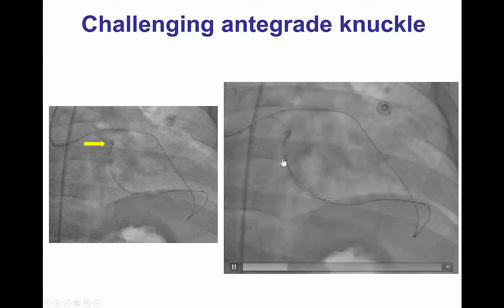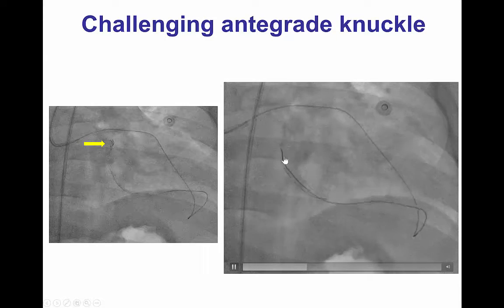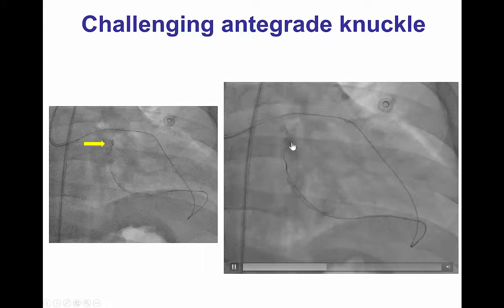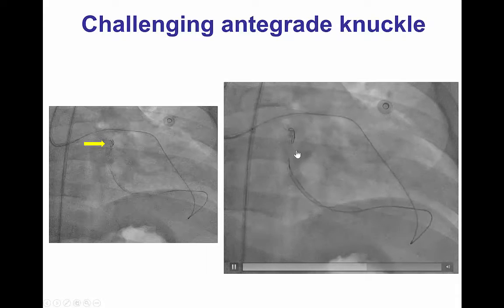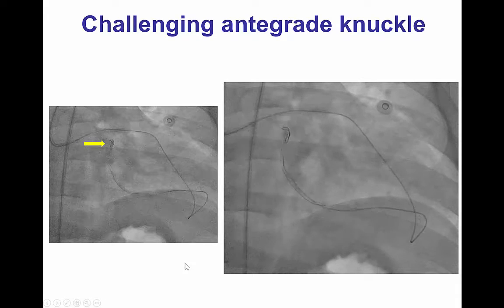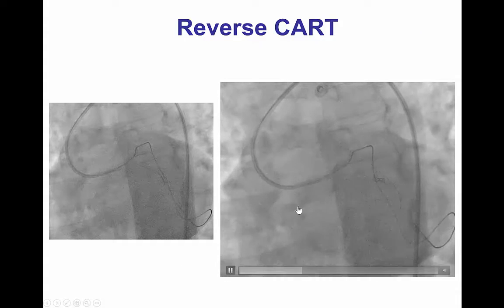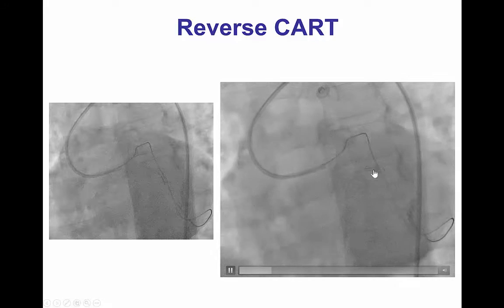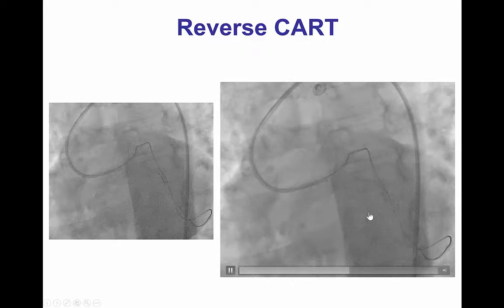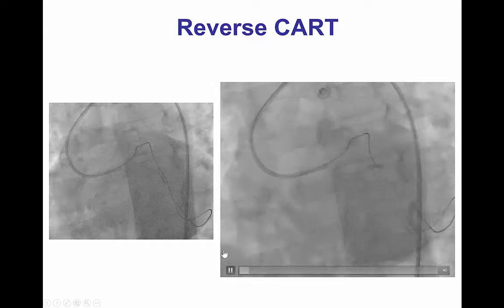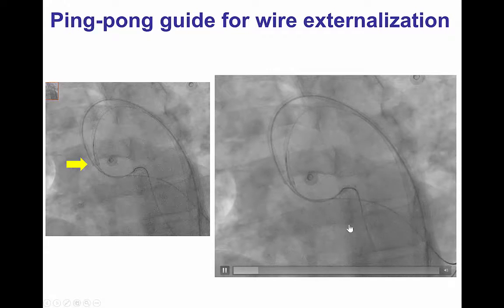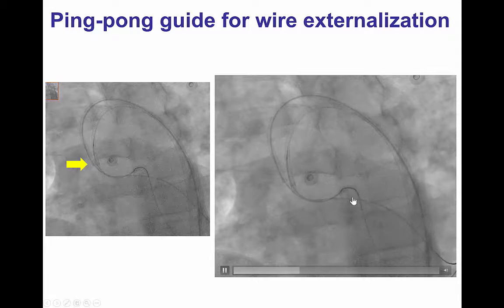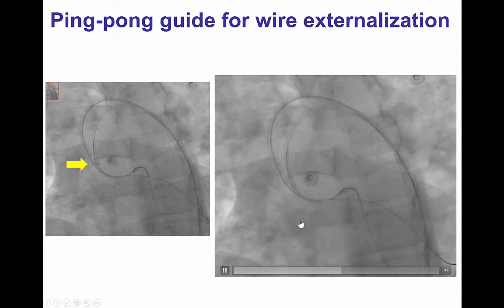It was challenging advancing the retrograde wire due to severe tortuosity and calcification in the circumflex. However, we were able to perform the reverse CART in the mid-circumflex and then we were able to snare and externalize the retrograde guidewire.